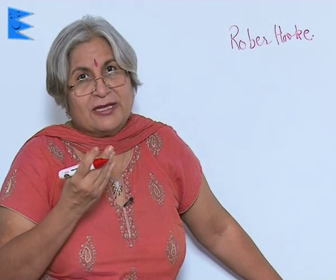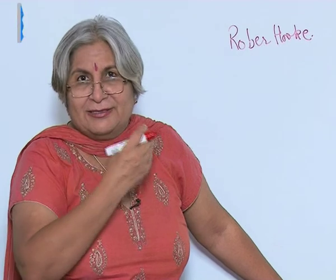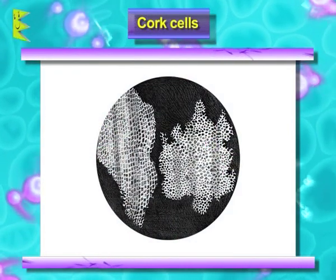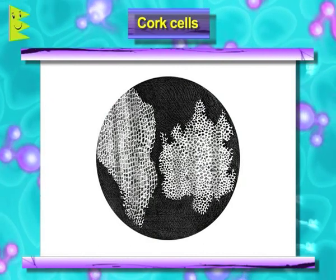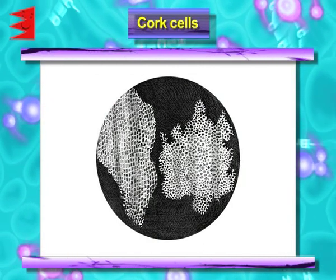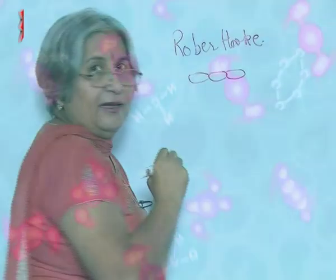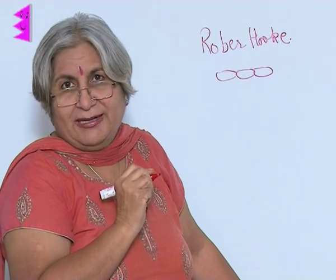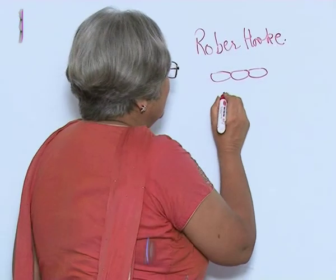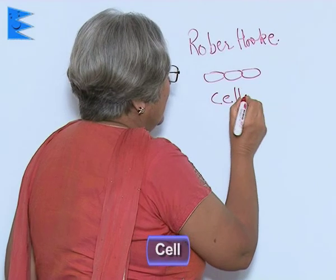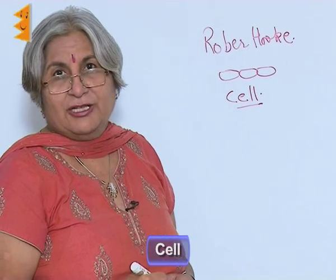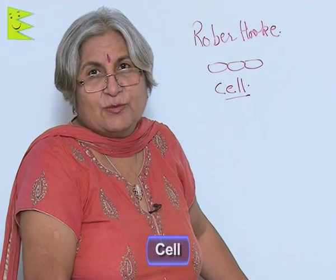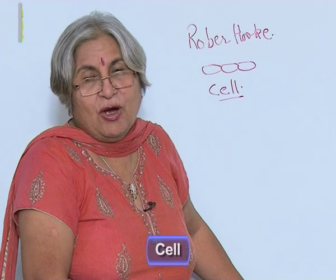And what he saw was just another world. He saw that actually the cork slice is made up of many tiny compartments like this. This reminded him of a small room. So what did he call it? He called it a cell. Even today when we are talking about a jail, we say that person is in a cell — because a cell is a small compartment or a small room.